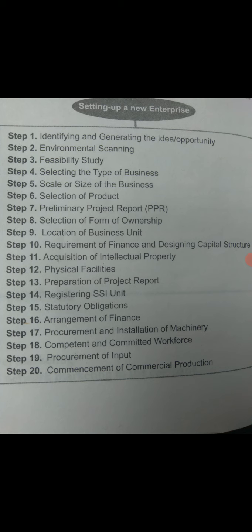In product selection, the entrepreneur considers what the productivity demands are, market demand, profitability, and whether any government concessions or subsidies are available for that product. On this basis, the product is decided. The seventh step — the preliminary project report (PPR) — is very important, and you may find short questions on this topic.